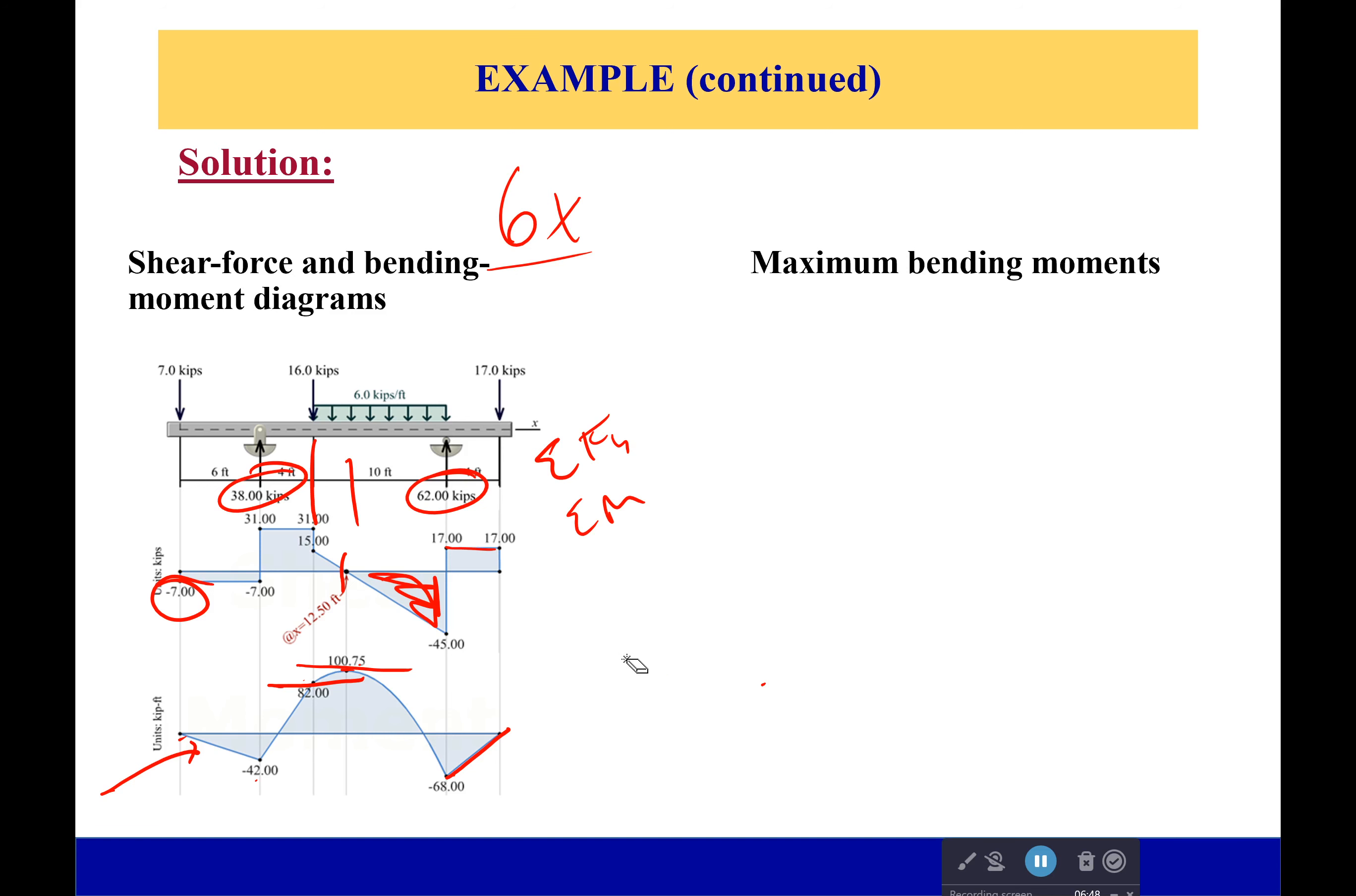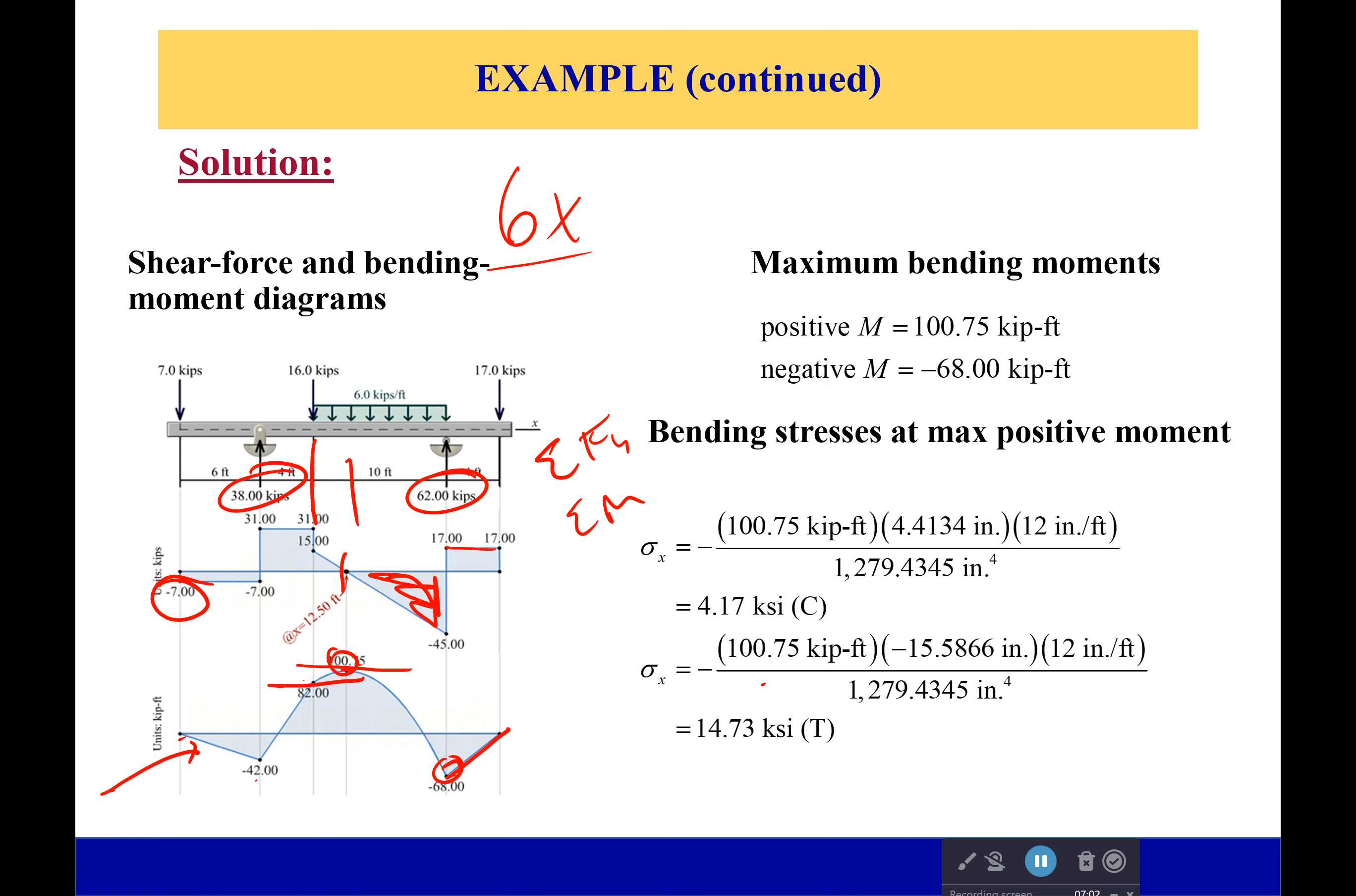We've looked at that, so now let's calculate our maximum bending moments. The maximum positive moment is 100.75 kip-ft, maximum negative is negative 68 kip-ft, right here and right here respectively. We can then calculate our bending stresses at those points. We get 4.17 ksi compressive for the positive bending moment and 14.73 ksi in tension for the negative bending moment—or sorry, for the negative moment, which is still for the positive bending moment but just at the bottom.